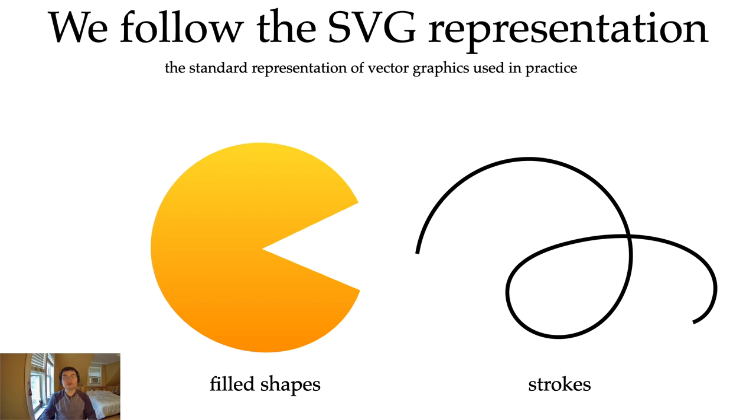We'll start from the representation. We follow the Scalable Vector Graphics Representation, or SVG, which is the standard representation of vector graphics used in practice. In SVG, we can define closed curves or open curves, and we can fill curves with colors or draw strokes with the curves. These curves are usually defined as polynomials or rational polynomials, like Bézier curves or ellipses. They're usually defined in parametric forms, so we have a function p that maps a scalar t to 2D positions. The most popular curves are quadratic or cubic Bézier curves, which are quadratic or cubic polynomials over t.